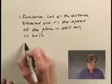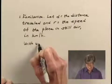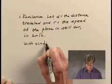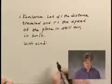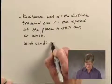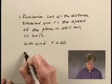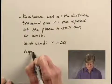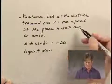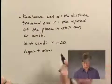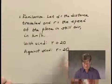When the plane travels with the wind, if the speed of the plane in still air is R and the tailwind is 20 kilometers per hour, then the airplane's speed with the wind is R plus 20 kilometers per hour. And when the plane travels against the wind, its speed against the wind is R minus 20 kilometers per hour.